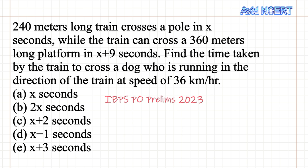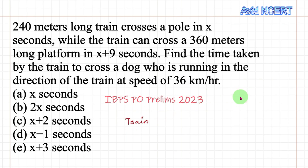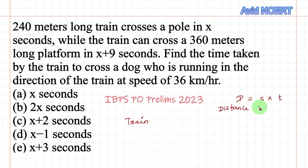From the first sentence, a 240 meters long train — they are giving us data about the train. We will be using the formula DST, which is D equals S into T, where D is the distance, S is the speed, and T is the time.